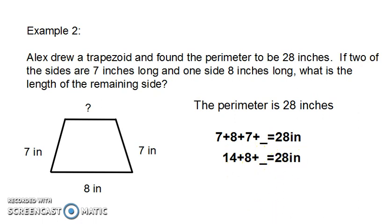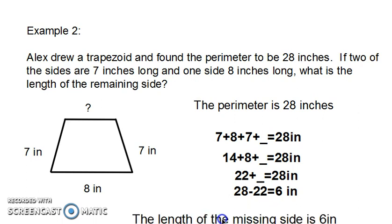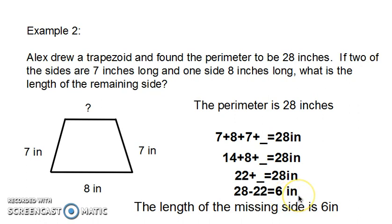Now to simplify even further, 14 plus 8 is 22. The total of the sides given is 22, so I will subtract that from the perimeter and the side that is missing equals 6 inches.